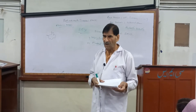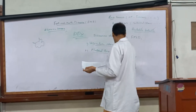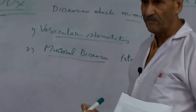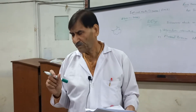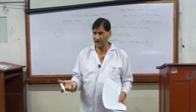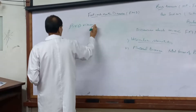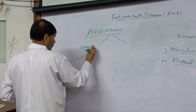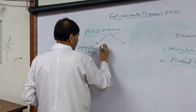Mucosal disease is a fatal form of BVD — bovine viral diarrhea. These two diseases form a complex. In the case of Mucosal disease, there is death, and the pathogenesis is a little bit different. BVD has two types of viruses: Cytopathic type and Non-Cytopathic type.